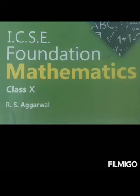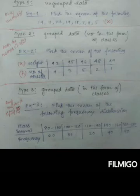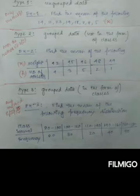Hello students, I hope everyone is fine. This video is for Class 10, subject Mathematics. Today we'll be discussing Chapter 25, Measures of Central Tendency, and specifically how to find the mean of some given data. There are various methods to find mean, but before we learn those methods, you need to understand data — what it is and how many types there are, because depending on each type of data we'll use different formulas and methods.